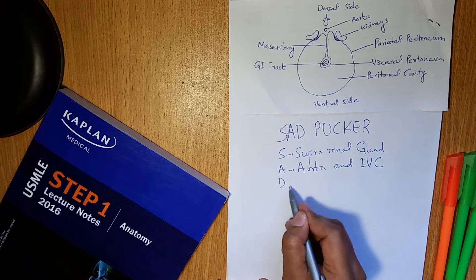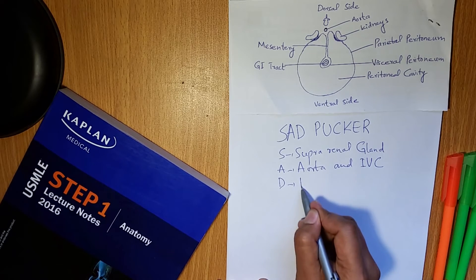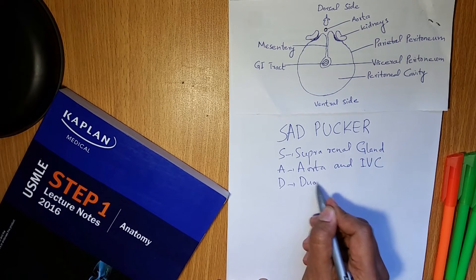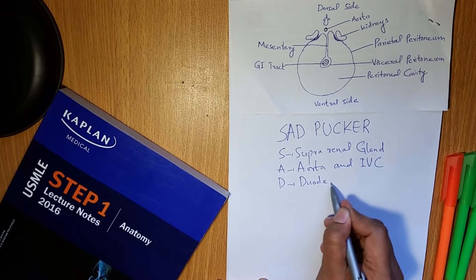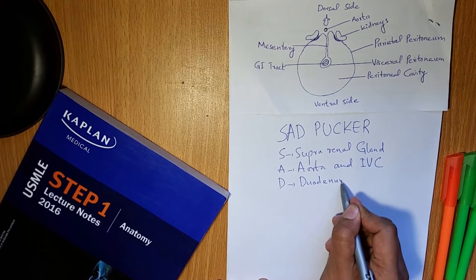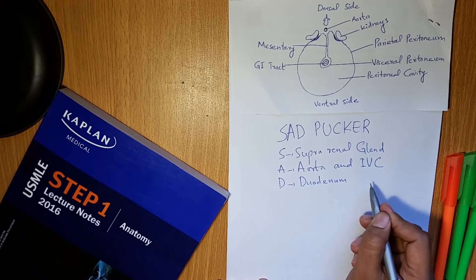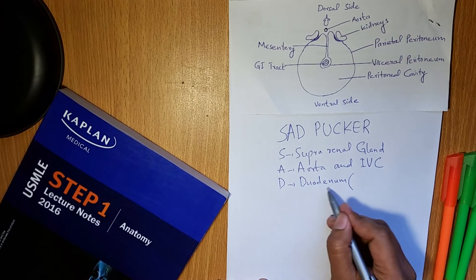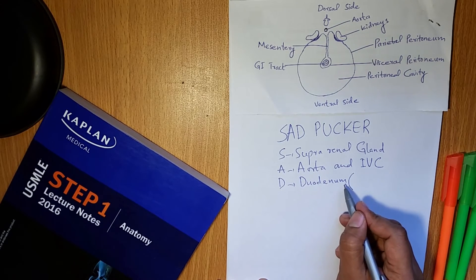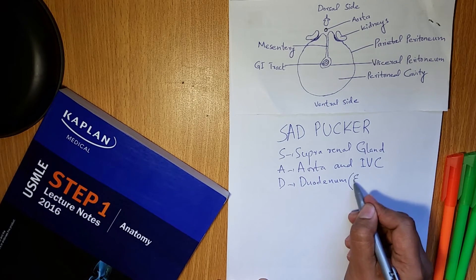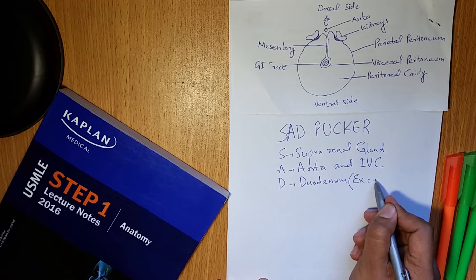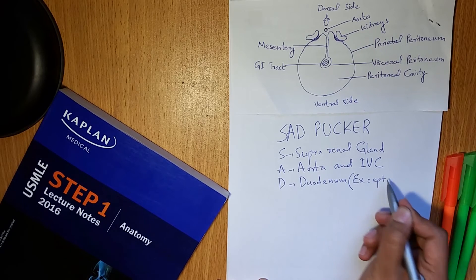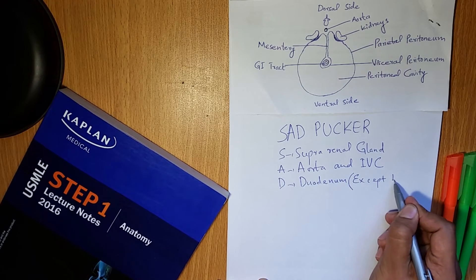D is for duodenum. But remember one thing: the duodenum is retroperitoneal except for its first part.